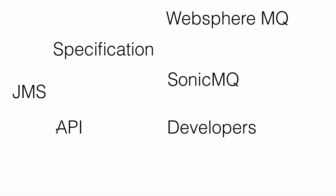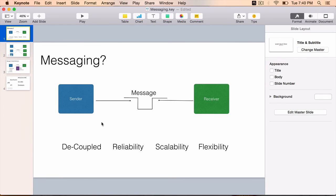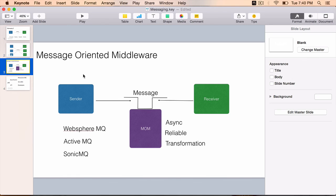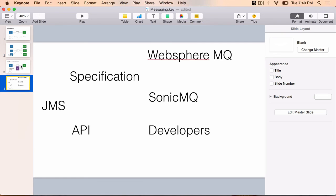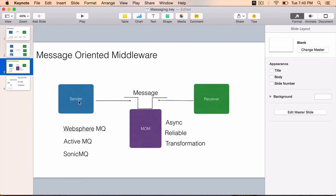To summarize, messaging is where we develop loosely coupled applications or components within an application and we put messages onto a destination and another application or component can read that message. Message-oriented middleware allows us to do that in an easier fashion, providing all the software and hardware infrastructure for sending and receiving messages. JMS is the way to use message-oriented middleware and do messaging in the world of Java.